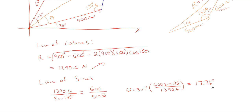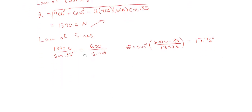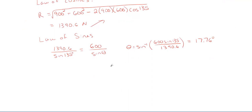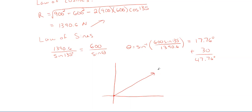Keep in mind that 17.76 degrees is not the total angle off of the x — that is the angle off of the 900. To get the total angle off of the x, we just add in 30 degrees. So my total angle ends up being 47.76 degrees. In the end, the resultant is 1390.6 Newtons at a total angle of 47.76 degrees off of the x-axis. That is my final solution for this problem.